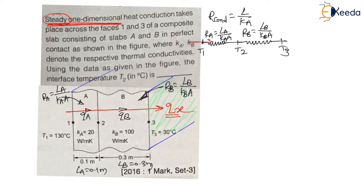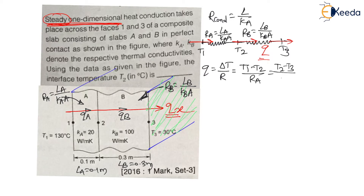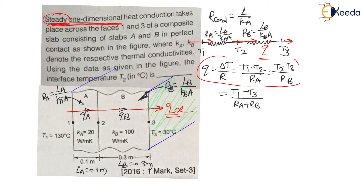Through this circuit heat Q is flowing. As it is steady state heat transfer, the heat transfer — which is the temperature difference divided by resistance — will be the same in all slabs. We can write: (T1 − T2)/RA = (T2 − T3)/RB = (T1 − T3)/(RA + RB). RA and RB are in series, so they get added. To find the interface temperature, we will use the first two equations.